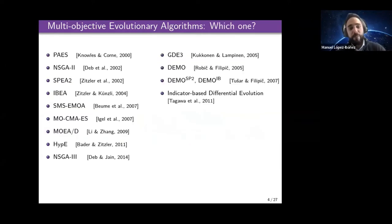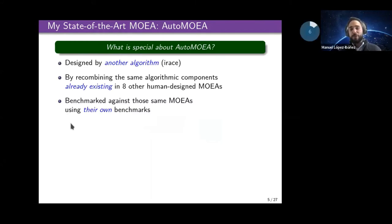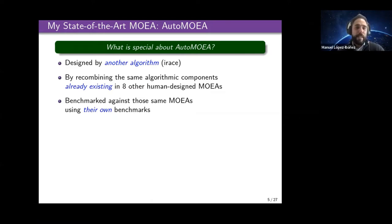There are many algorithms of this type, and it's not always easy to know how to select the one you want to use in practice. So we proposed our own multi-objective evolutionary algorithm — auto-MOEA. But there's something special about it: auto-MOEA was not designed by us directly, but was designed by a different algorithm called IRIS, by taking components from human-designed MOEAs and recombining them in a different way.